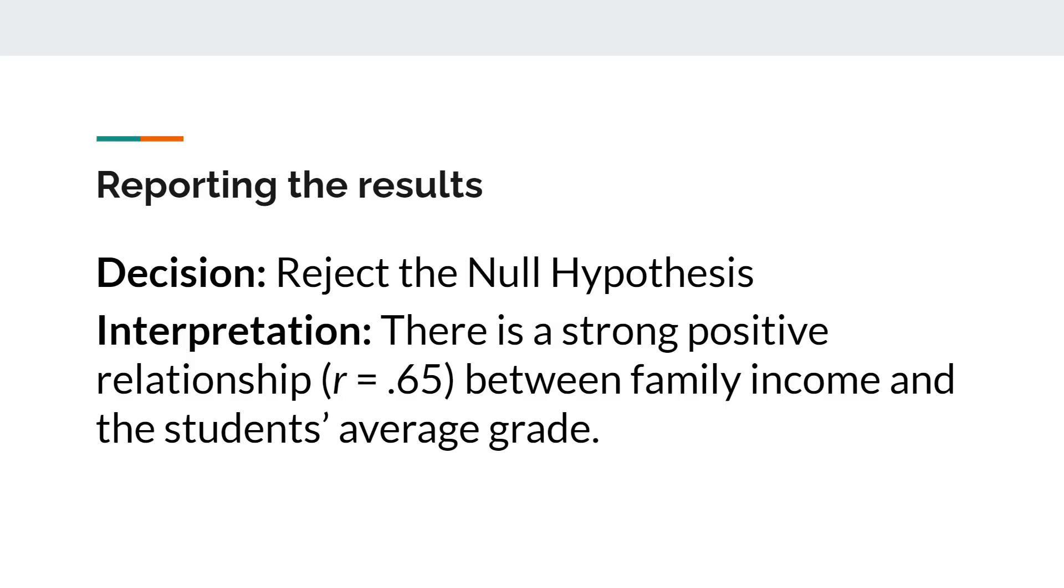Now, we are done with our analysis. And our decision is that we will reject the null hypothesis because we were able to prove that there is a relationship between the two variables. Let me give you a sample interpretation. In words, this would mean there is a strong positive relationship between family income and the student's average grade. Remember to put the coefficient here. And then, after this, you can explain it in layman's term. You can say it as, as family income increases, then there's a higher chance for the student to get a higher grade. That is it for correlation analysis. I hope that you were able to learn a lot from this discussion. Let me know if you want me to talk about other types of analysis that we can do using Jamovi.